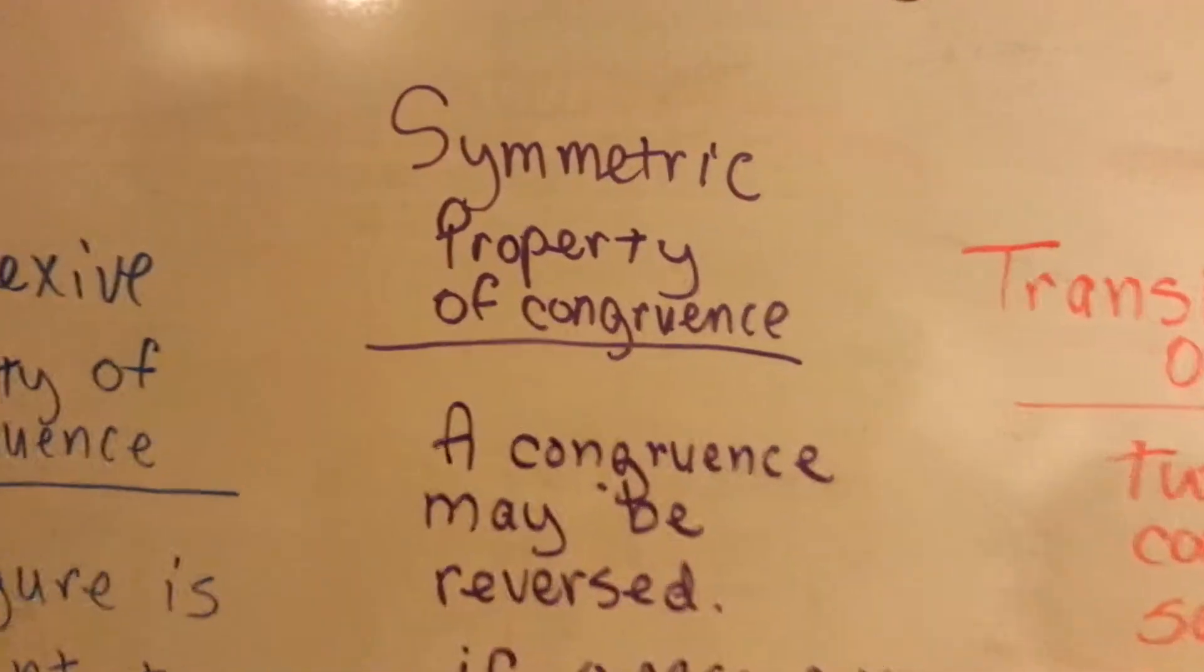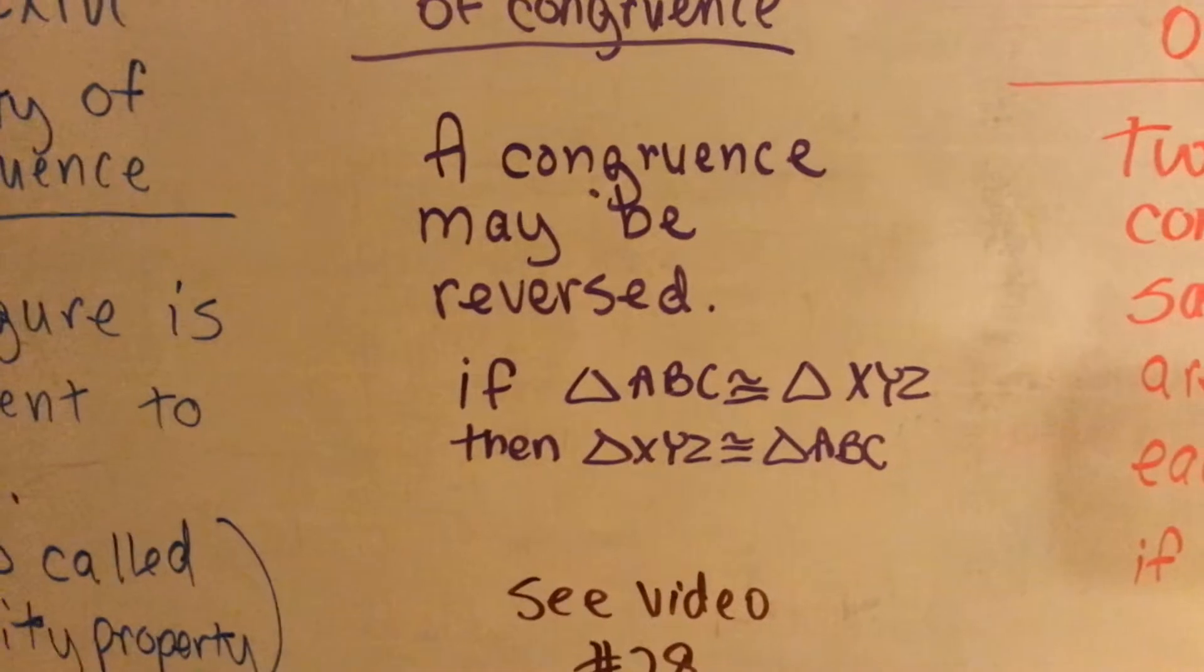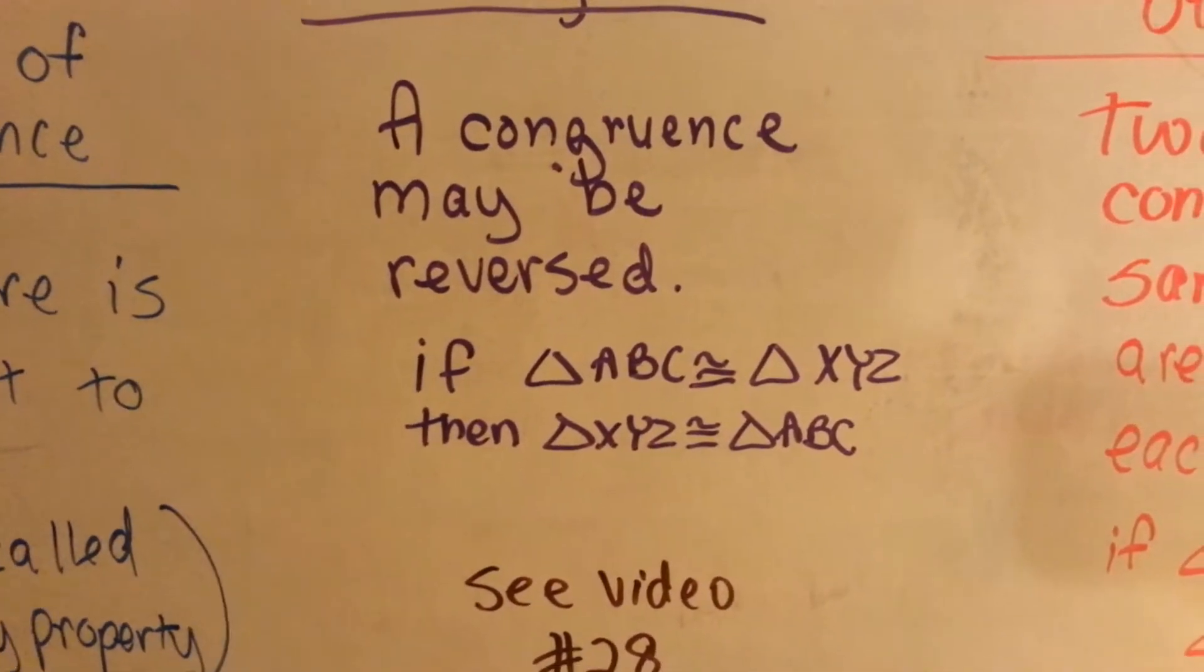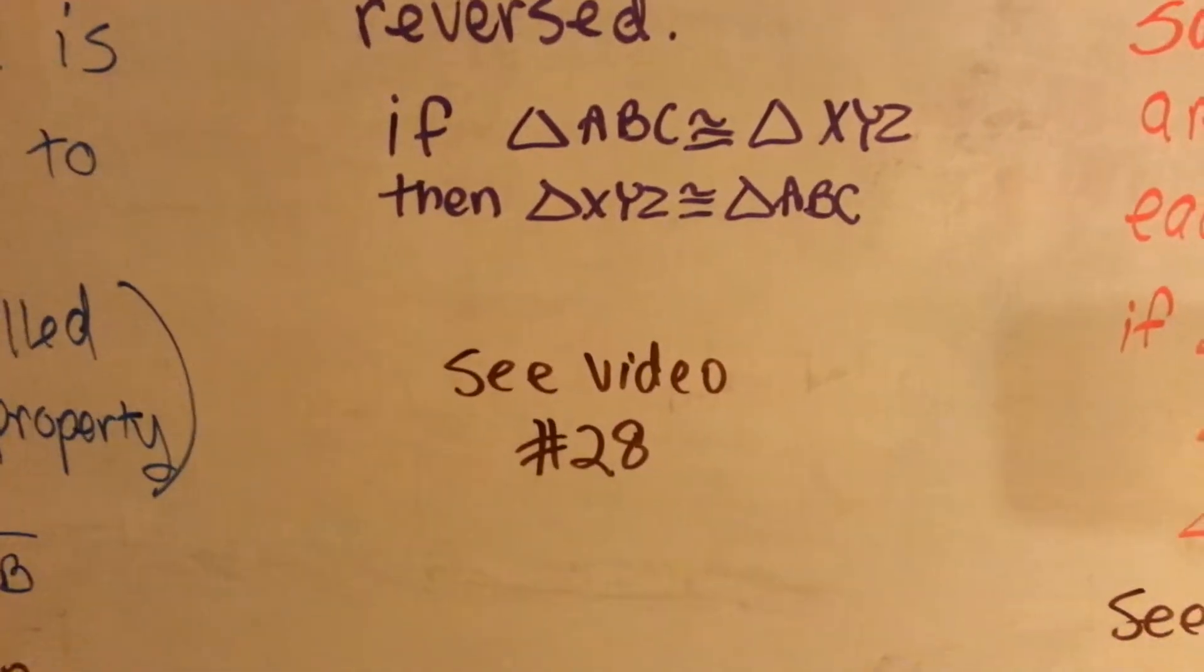Then we've got the symmetric property of congruence. A congruence may be reversed. If triangle ABC is congruent to triangle XYZ, then XYZ is congruent to ABC. You can go back and watch video number 28.